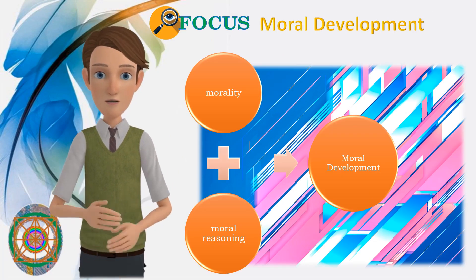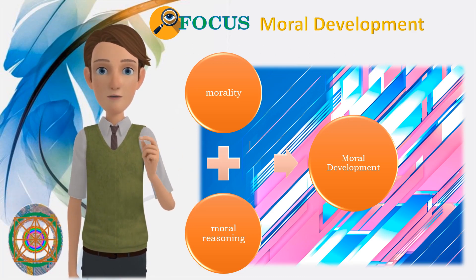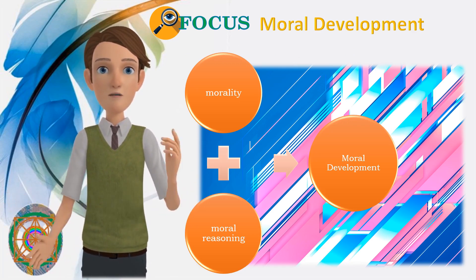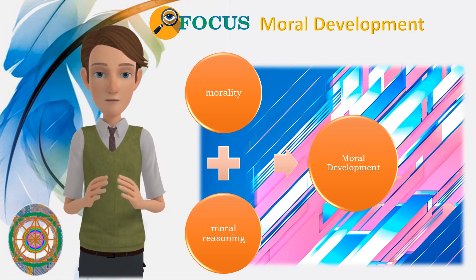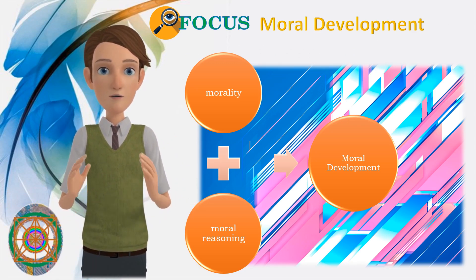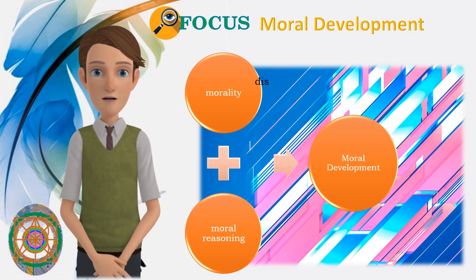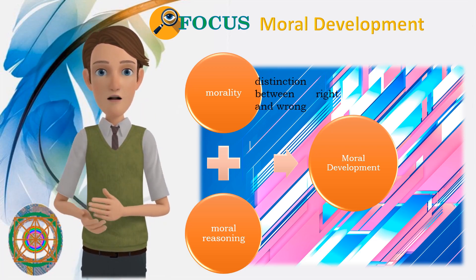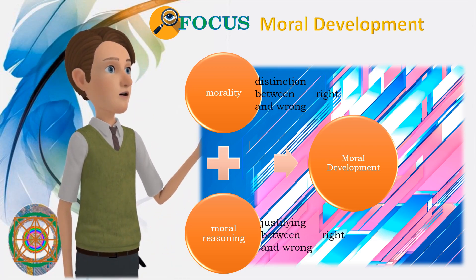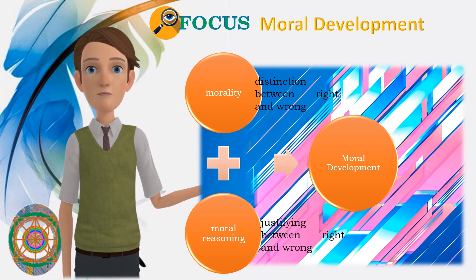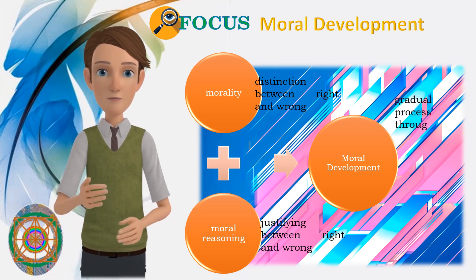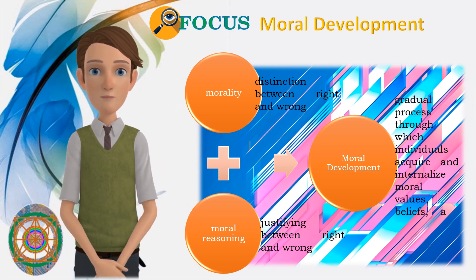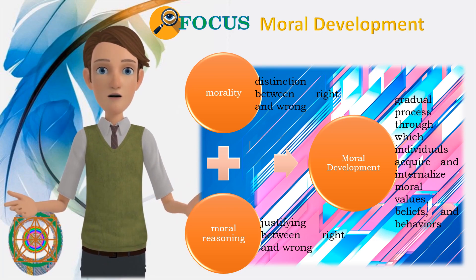But before focusing on Kohlberg's theory, let us talk first about moral development. Moral development is the process by which people develop the distinction between right and wrong, which is morality, and engage in justifying between the two, or simply moral reasoning. It is a gradual process through which individuals acquire and internalize moral values, beliefs, and behaviors.